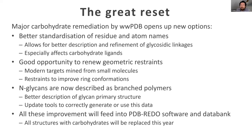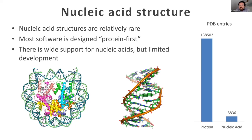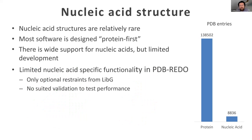Moving on from sugars to nucleic acid structure. If you browse through the PDB, you might notice that nucleic acid structures are relatively rare compared to proteins, and that means quite a lot of software is designed protein-first. There is good support for nucleic acids but limited development, and we've been guilty of that as well — in PDB Redo we didn't have any nucleic acid-specific functionality. We did have the option to generate restraints with LIBG, but we didn't have any test to see whether those restraints worked very well. So this raised an important question: how do we validate nucleic acid structures?